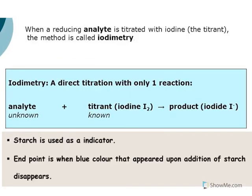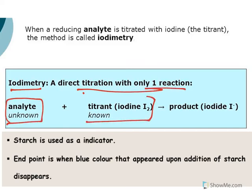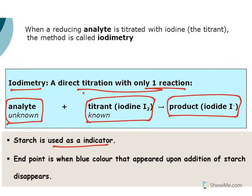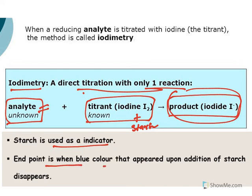Iodometry is thus an indirect titration method. In contrast, iodimetry is a direct titration with iodine — the analyte is directly titrated with iodine, producing iodide. Again, starch is the indicator. When free iodine is present it combines with starch and gives a blue color; when iodine is consumed by the analyte, the color disappears. The endpoint is when the blue color, which appeared upon addition of starch, disappears.